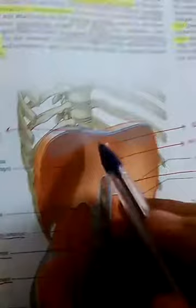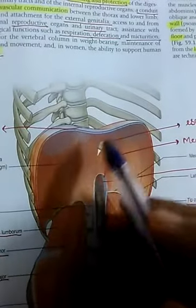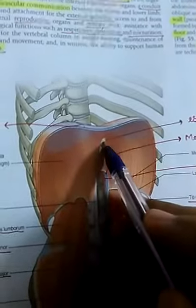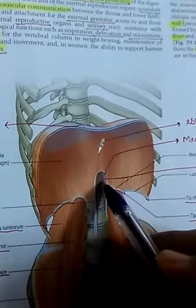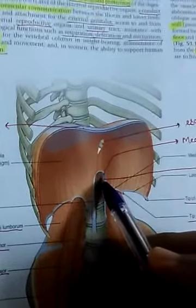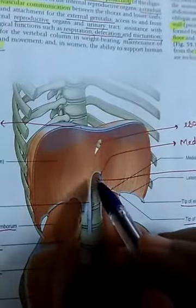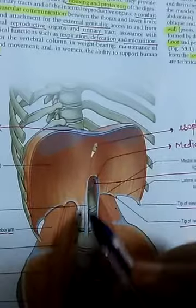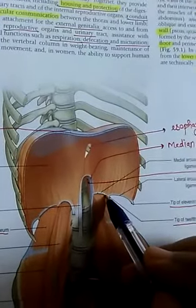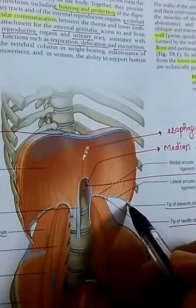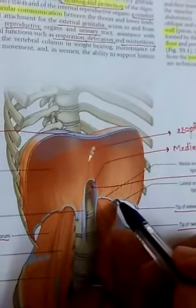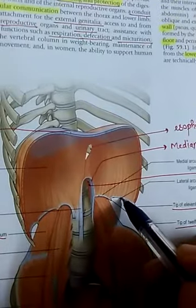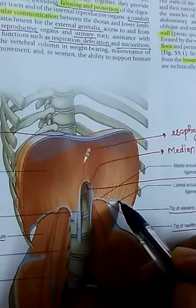Looking at the diagram of the diaphragm: the white structure is the central tendon, here is the IVC opening, here is the esophageal opening, and this is the median arcuate ligament. The aorta is somewhere here, passing behind — not within the diaphragm itself. This is the medial arcuate ligament and this is the lateral arcuate ligament. One additional point: the subcostal vessels pass beneath the lateral arcuate ligament.